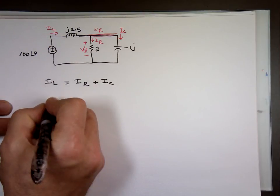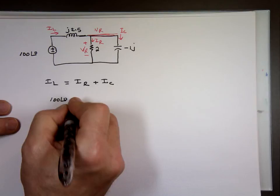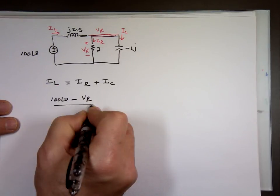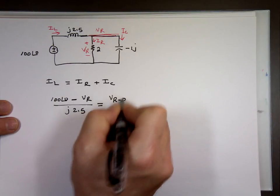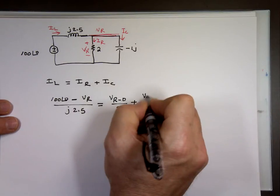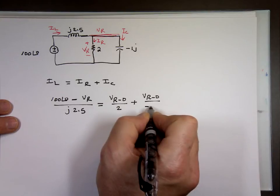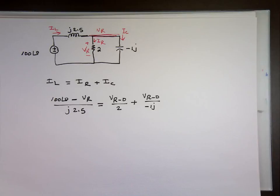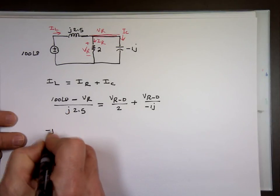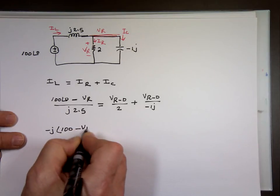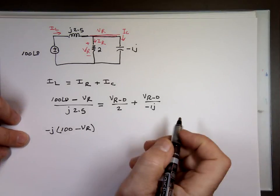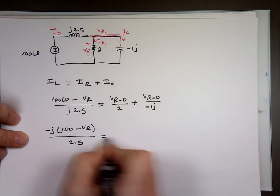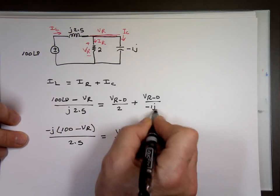And what is I sub L? It's this voltage, 100 minus VR over J 2.5 equals VR over 2 plus VR over negative 1J. Now quickly here, the J is in the bottom. Just bother me a little bit. That J in the bottom will make it negative J on the top. So negative J times 100 minus VR over the 2.5, VR over 2. The negative J in the bottom, bring it to the top, becomes plus J.